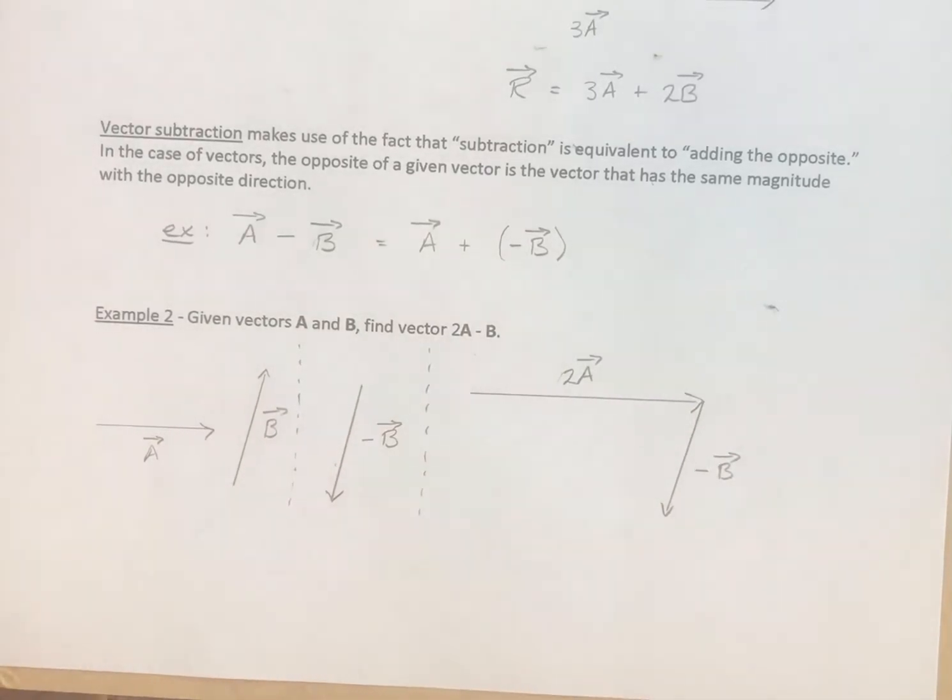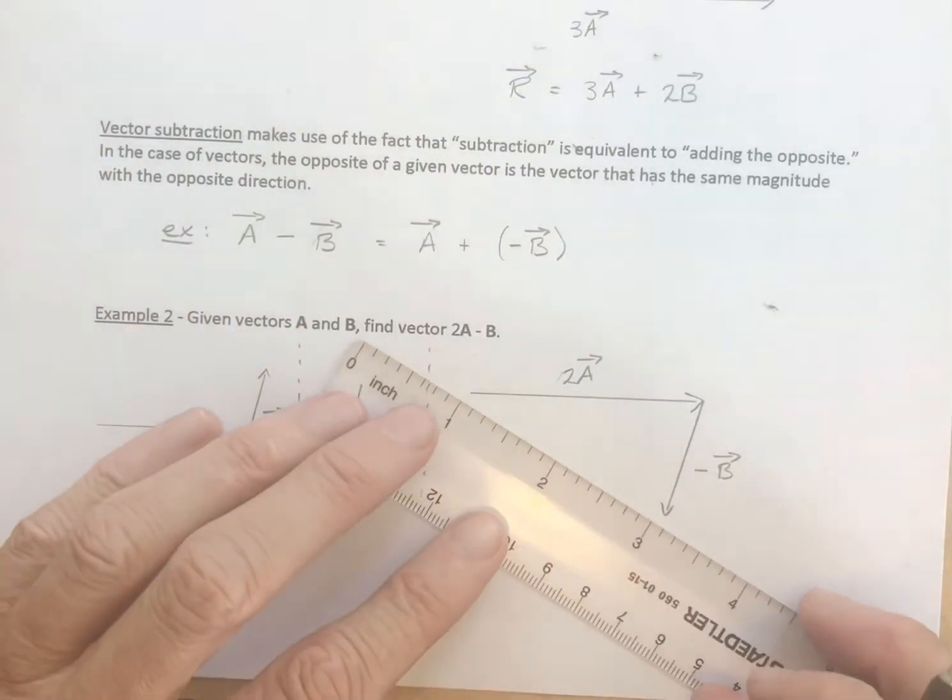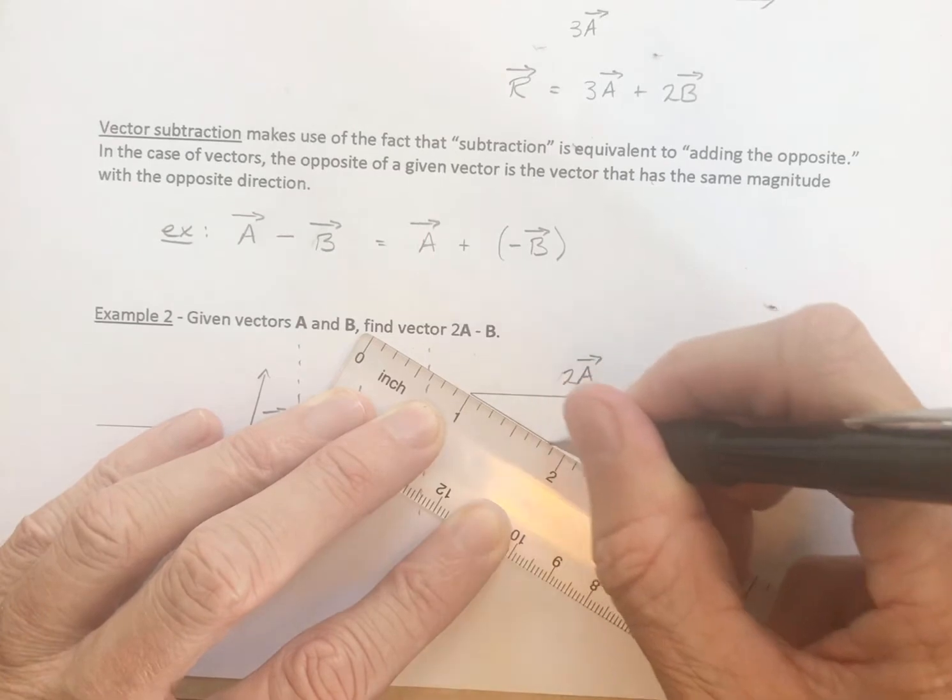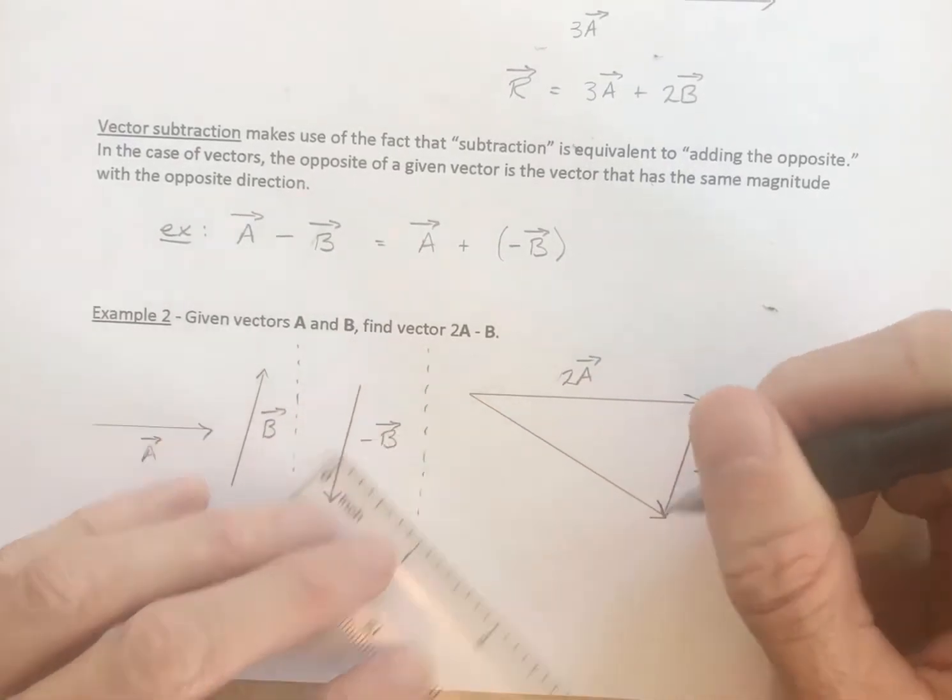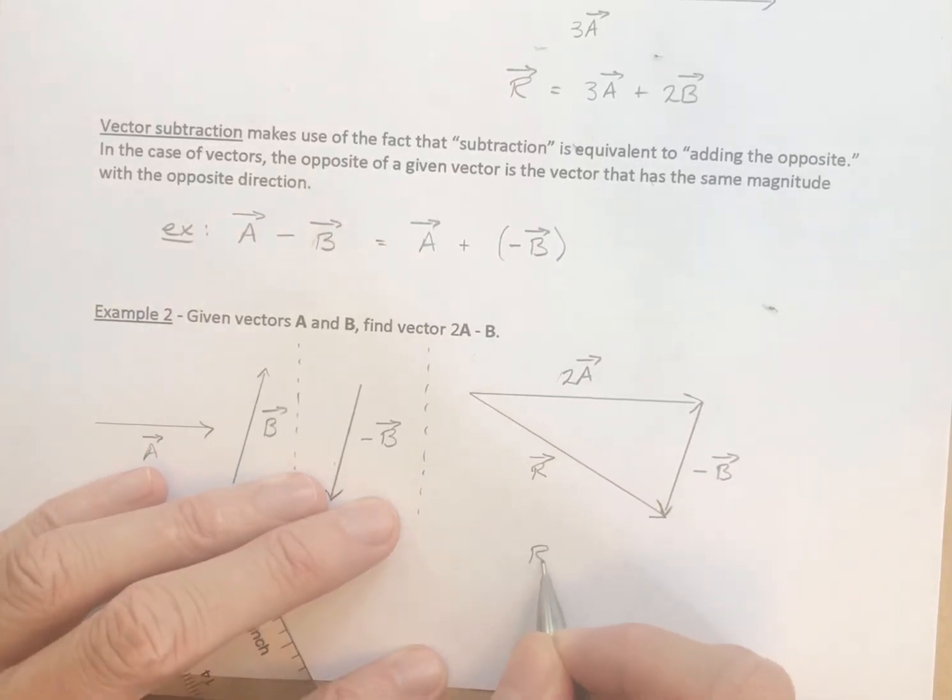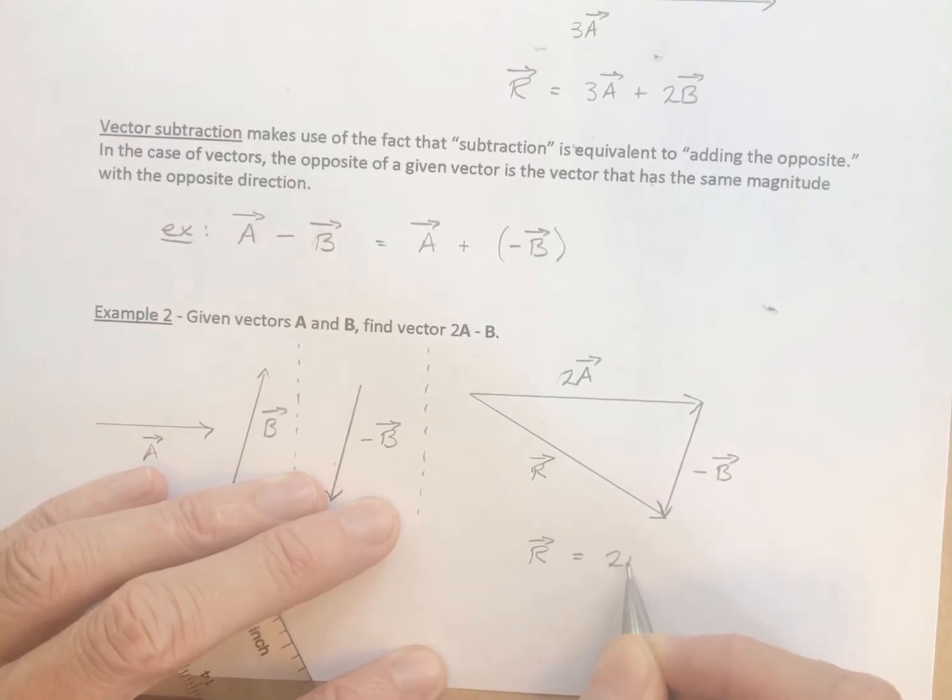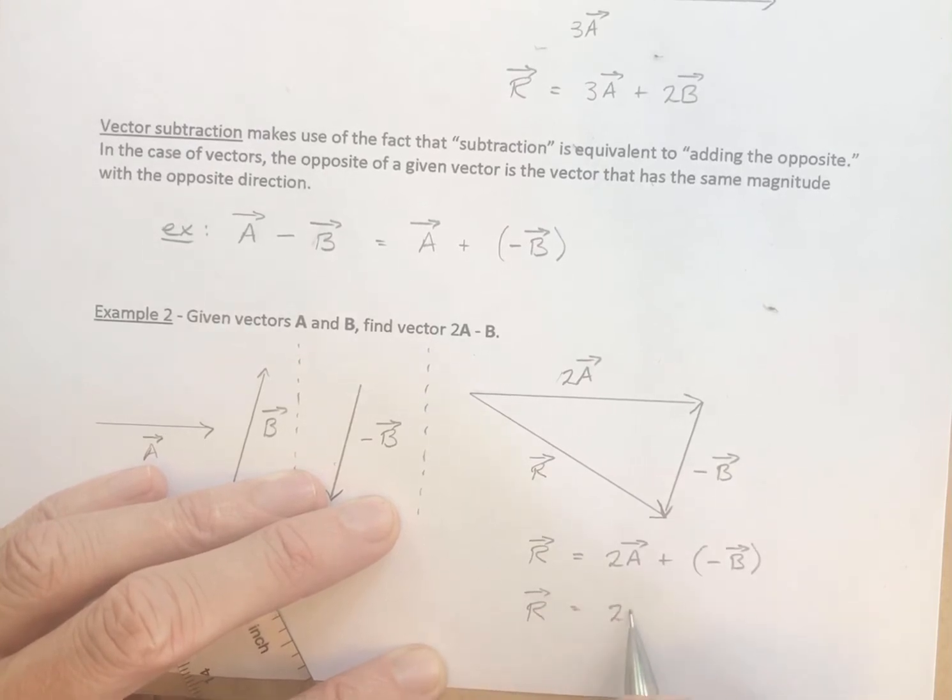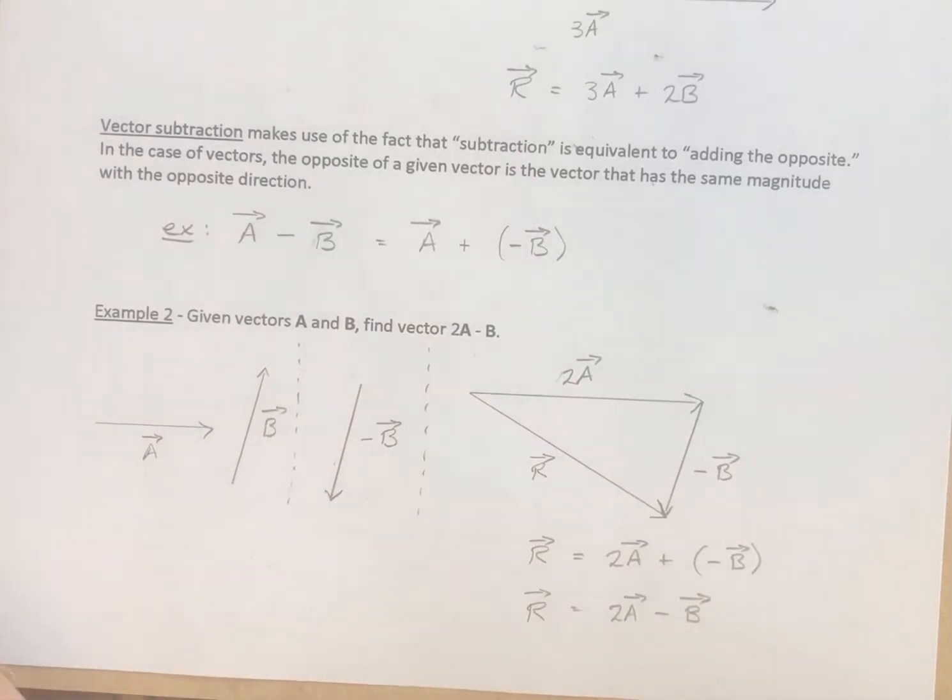And so the resultant, again, first tail to last head, is this one. Right there. So that's the resultant vector. So our resultant is equal to 2 of the vector a, plus the opposite or the negative of vector b, which, of course, is the same thing as 2a minus b. So subtracting, we're going to add the opposite.